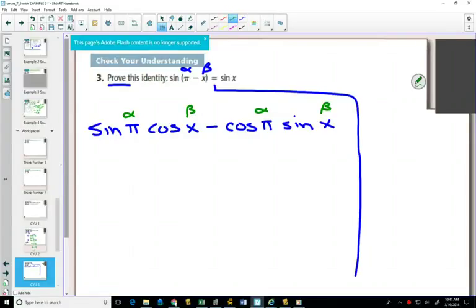Sometimes before you get too far, it's nice to label those things out just to make sure we plug in things correctly. So I used the formula just to write down the first step, and now I'm going to re-evaluate. Is there anything I can do with this?